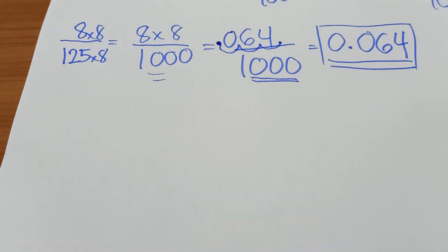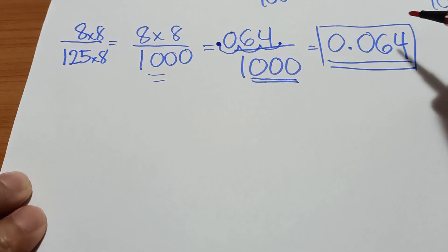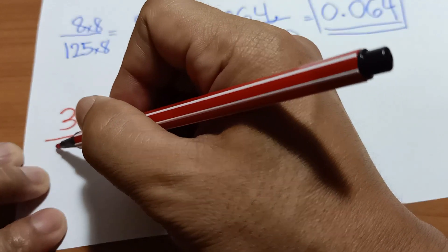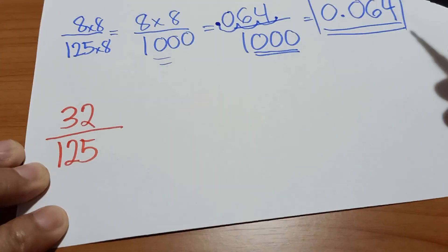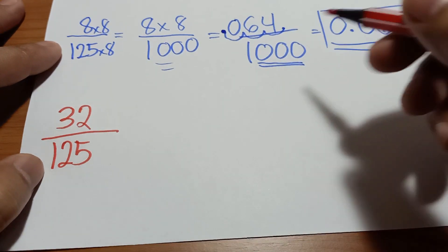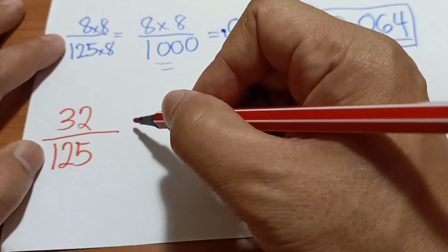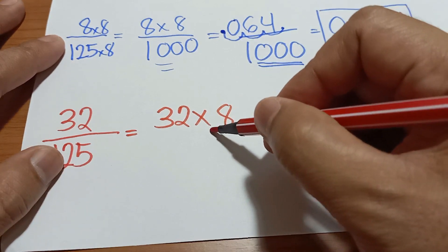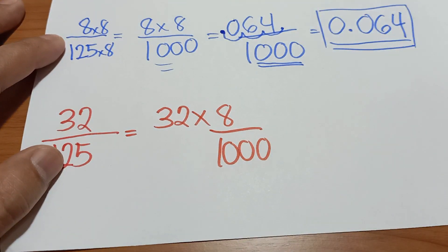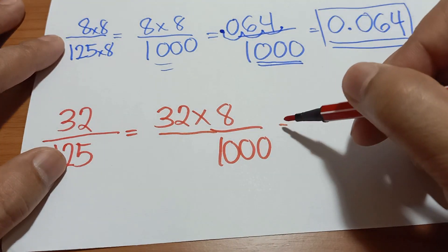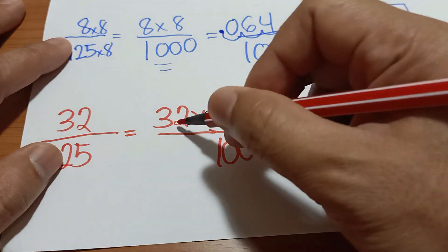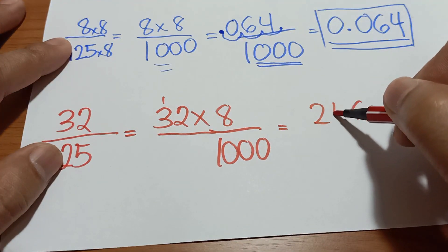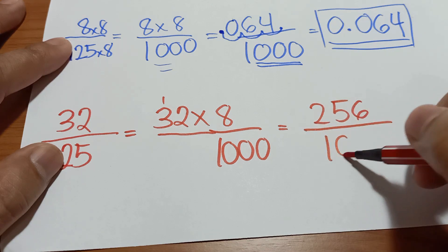Let's take another example. Divide 32 by 125. All you have to do is multiply it by 8, or 2 times 2 times 2, so it becomes 32 times 8 over 1,000. Let's compute: 8 times 2 is 16, carry the 1.